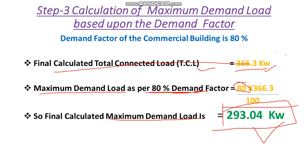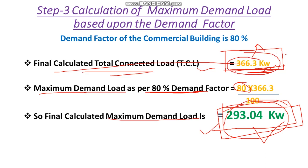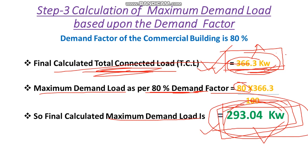This 293.04 kW is our final calculated maximum demand load. If we were to calculate the transformer size based on the total connected load of 366.3 kW instead, the transformer would be oversized compared to actual demand, which would be a waste of money.